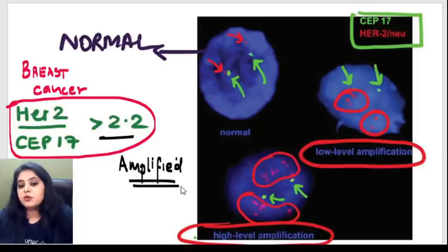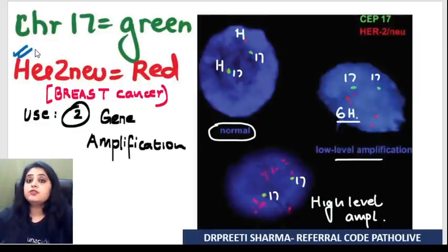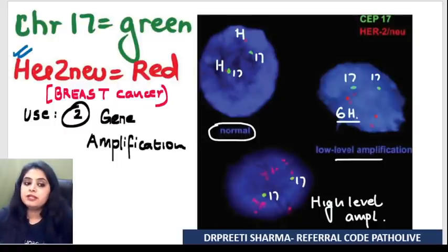Why is that important in breast cancer? Because your treatment depends on it. Targeted therapy against HER2/neu — trastuzumab — can be given if you label it as HER2/neu amplified.